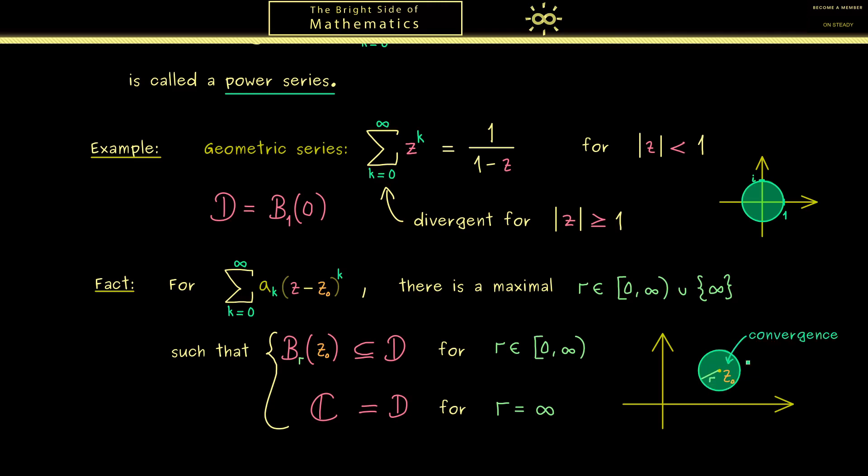In the complex plane we have this ball with z_0 in the middle and with radius r. And in the inside of this ball convergence is guaranteed. Moreover in the outside of this ball divergence is guaranteed.